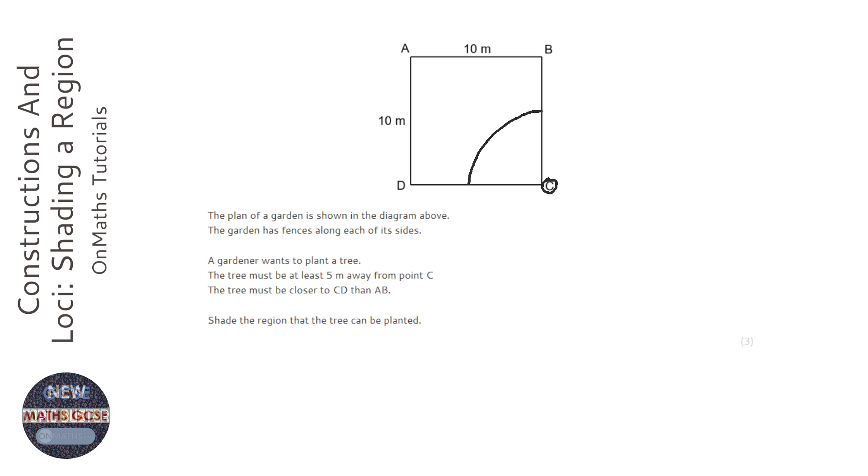Okay, so that's that first bit sorted. Now it says the tree must be closer to CD, which is this bit here, so it's got to be closer to this than AB. So than this. What we need to do is ensure that it's closer to the red line than the green line.